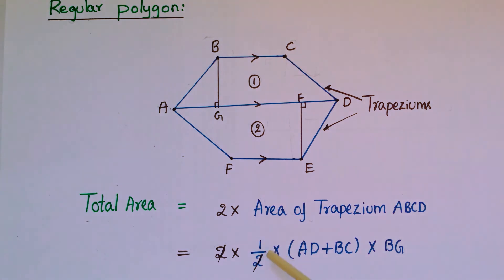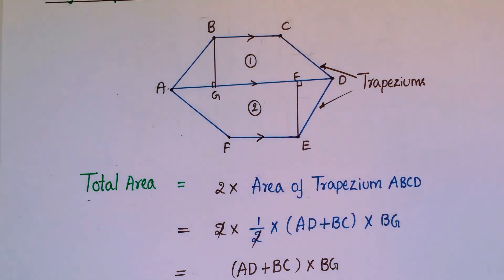Then cancel this two and two, then you will get AD plus BC times BG.